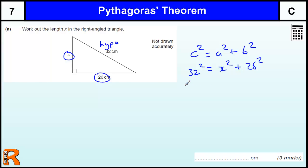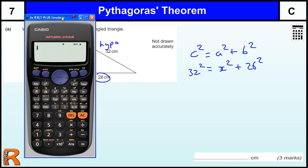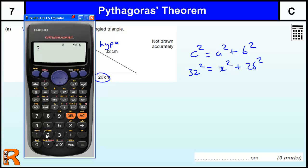So let's bring in our calculator. 32 squared equals 1024 and 26 squared is 676.